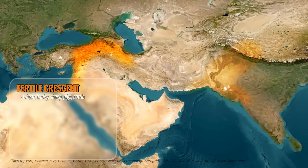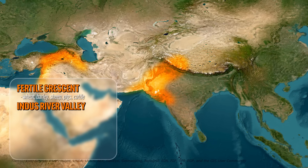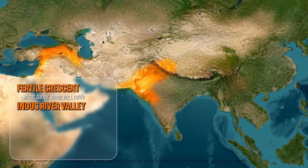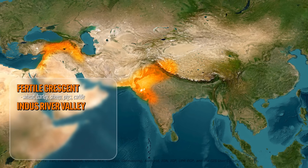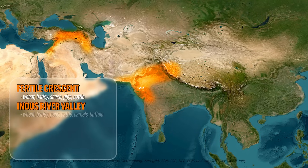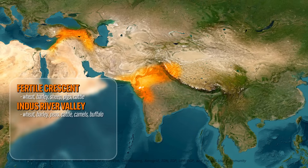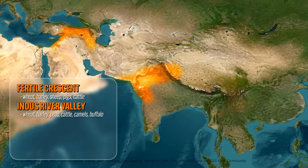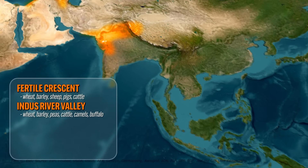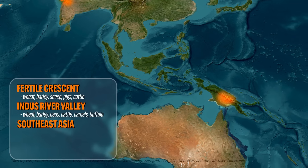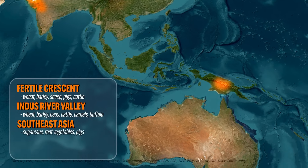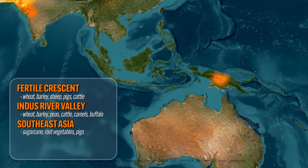Second, over here in South Asia, we have the Indus River Valley, which, just like the Fertile Crescent, was home to a massive amount of water and fertile soil. Here they figured out how to domesticate plants like wheat, barley, and peas, and animals like cattle and buffalo. Third, over in Southeast Asia, they figured out how to domesticate plants like sugarcane and root vegetables, and animals like pigs.